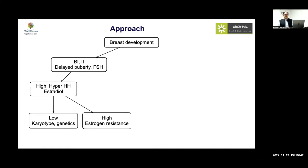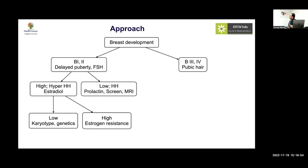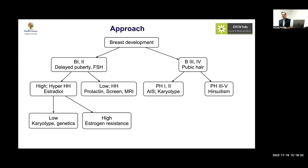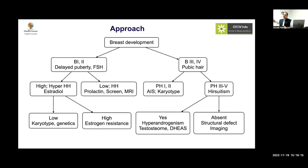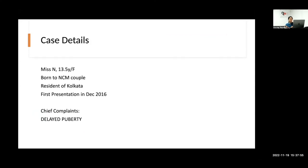If estrogen is high, think estradiol resistance. Low FSH means a central cause — go for MRI. Normal breast with no pubic hair is most likely androgen insensitivity — go for karyotype. Good pubic hair with hirsutism — work up for hyperandrogenism. No hirsutism — look for structural defects. No breast and no periods — hypo- or hypergonadotropic hypogonadism. Normal breast and pubic hair without hirsutism — structural defect.